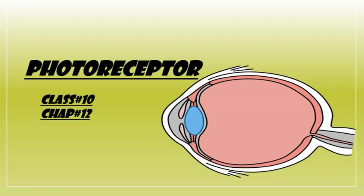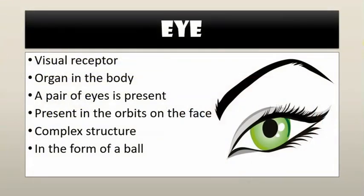Eye ka structure kya hai, ye kaise bana hua hai, aur dekhne ke liye kaunsa mechanism involved hoga. So what is the eye? It is a visual receptor — with the help of the eye you are able to see objects, things, and the world. It is the organ present in the body which is used as a photoreceptor, not only in humans but in animals and lower animals also.